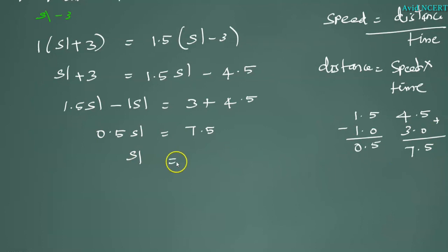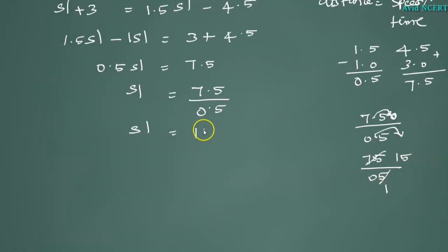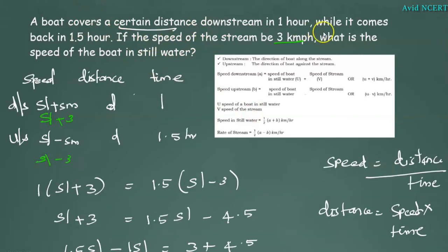To find SL, this 7.5 divided by this 0.5 comes down here. SL equals 15 kilometer per hour. From this we know that the speed of the boat in still water is 15 kilometer per hour.